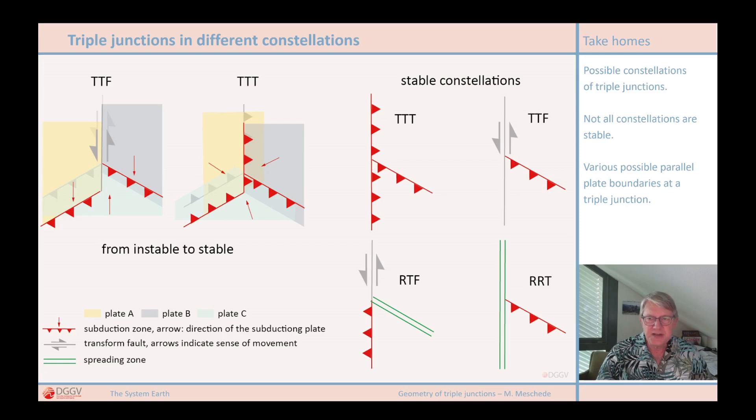At the TTT triple junction with three subduction zones, it is similar. Due to the plate movement, the boundaries shift so that in the end two subduction zones run parallel at the triple junction and only one at an angle to it.